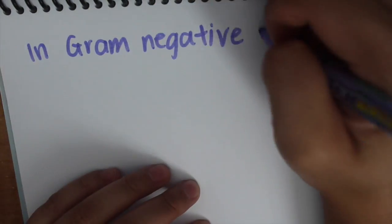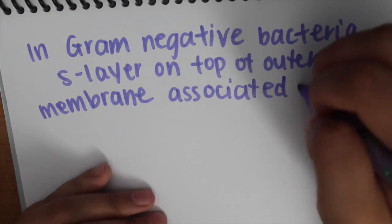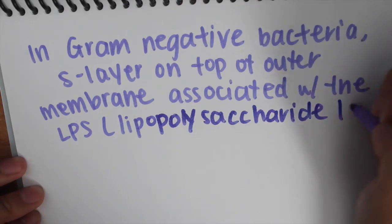In gram-negative bacteria, the S layer is on top of the outer membrane associated with the LPS, the lipopolysaccharide layer.